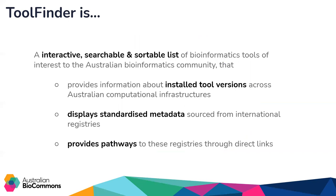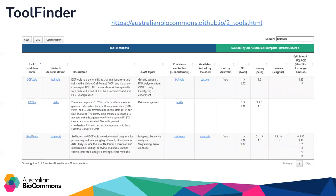This led us to create Tool Finder. Tool Finder is an interactive, searchable, and sortable list of bioinformatics tools of interest to the Australian bioinformatics community. It provides information about installed tool versions across Australian computational infrastructures, displays standardized metadata sourced from international registries, and provides pathways to these registries through direct links. It started as an internally maintained Google Sheet and has now been transformed into a publicly available service maintained via a Git repository, integrating with both national and international peer infrastructures.